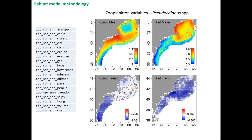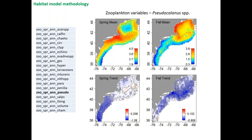Pseudocalanus — a combined count of two difficult-to-differentiate species — is highlighted as an important prey taxon for larval fish on this coast. Spring distributions are mostly focused in the northern mid-Atlantic Bight, with a seasonal shift into the Gulf of Maine. However, the spring and fall trend maps show nothing but blue — this species has virtually disappeared from the mid-Atlantic Bight and has declined throughout its range in fall as well, raising concerns about its ecosystem role.